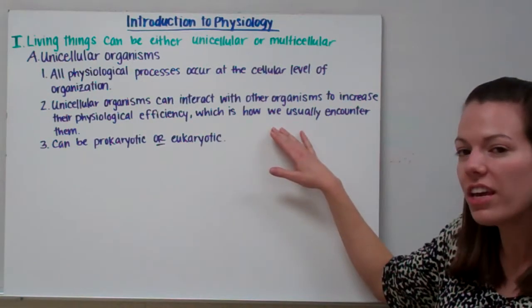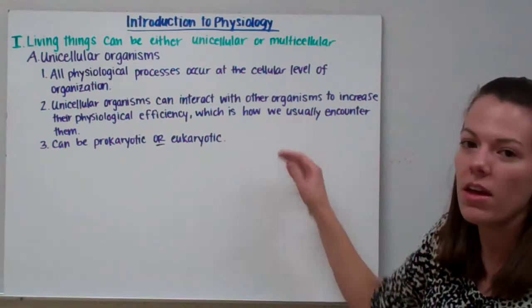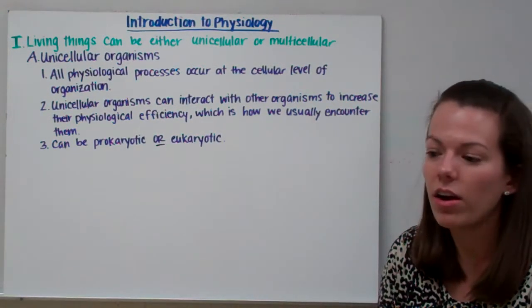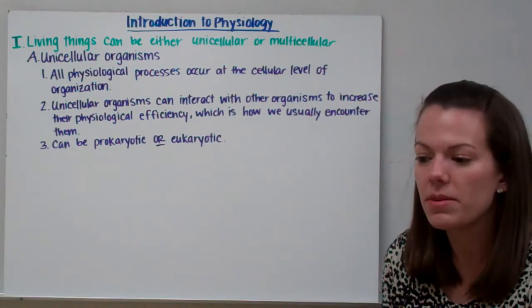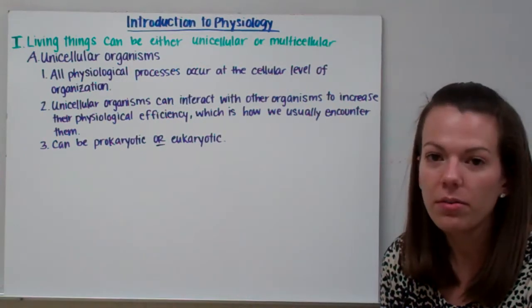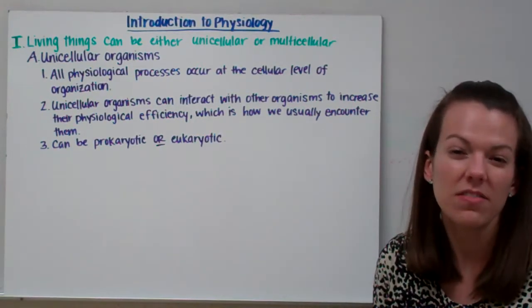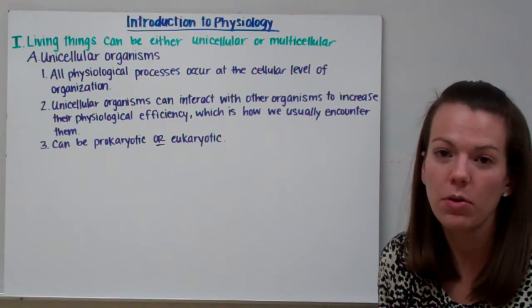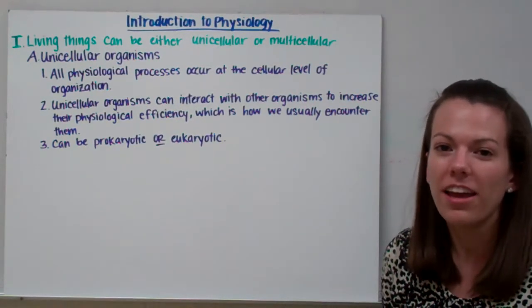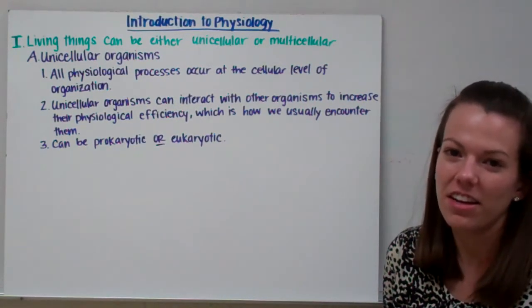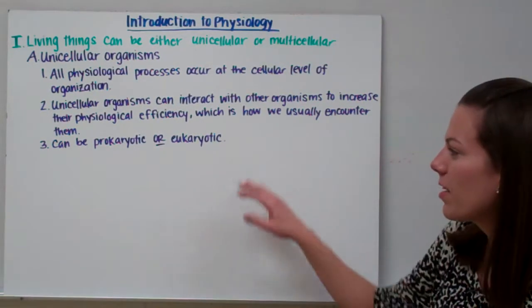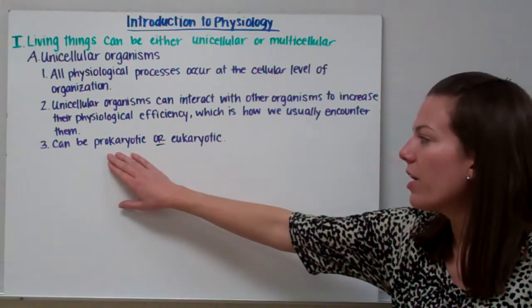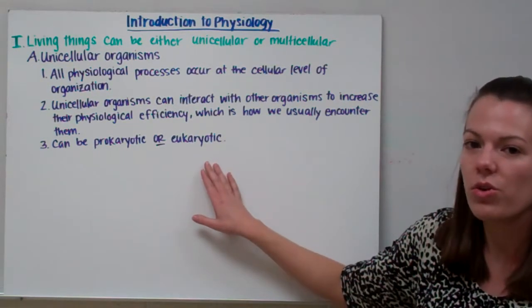This is how we usually encounter them in everyday life. Just because a cell or an organism is unicellular doesn't mean it can't live with other organisms of a similar type in order to cooperate and get things done efficiently. Unicellular organisms can either be prokaryotic or eukaryotic.